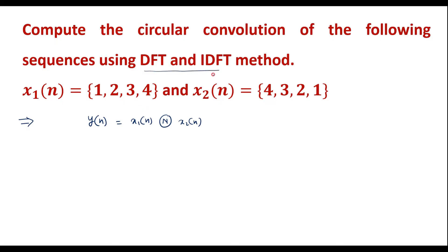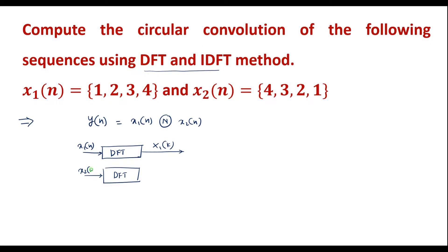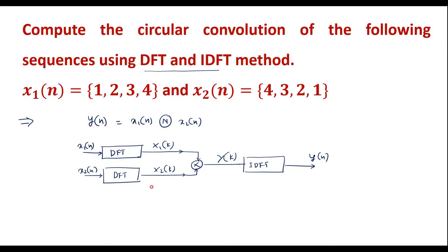The DFT-IDFT method is also known as the frequency domain method. In this method, first we calculate the DFT of the first sequence x1(n), which is represented as X1(k). Then we find the DFT of the second sequence x2(n), represented as X2(k). Then we multiply these two to get a new sequence Y(k). Finally, we find the IDFT of Y(k) to obtain y(n). This is the DFT-IDFT method of computing circular convolution.